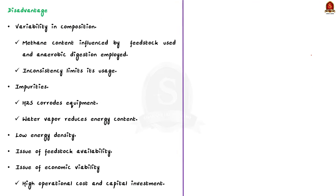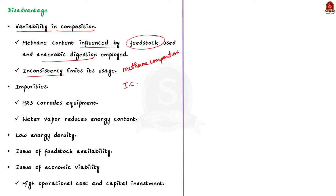Now, what are the issues associated with biogas? The first issue is variability in composition. The proportion of gases in biogas varies greatly depending on the feedstock and the anaerobic digestion process employed. This inconsistency in methane composition limits the application of biogas. For example, internal combustion engines used in vehicles cannot efficiently use biogas. The second issue is impurities — biogas often contains hydrogen sulfide, moisture, and other trace elements. Hydrogen sulfide can cause corrosion in equipment, and moisture reduces the energy content of biogas.